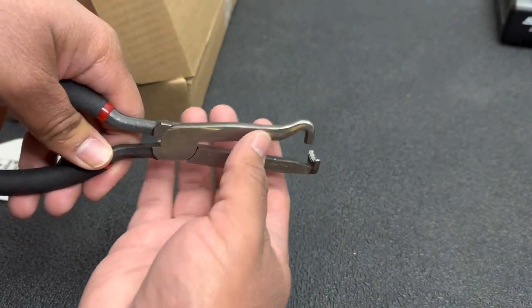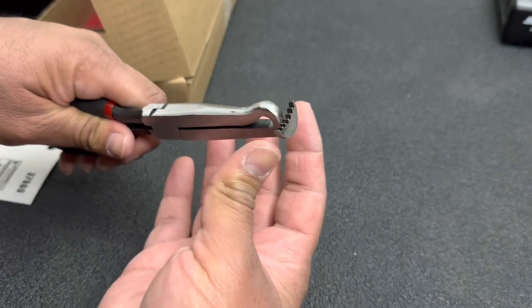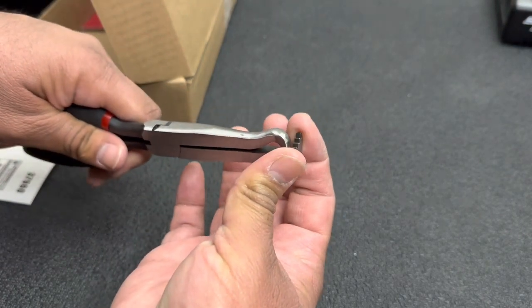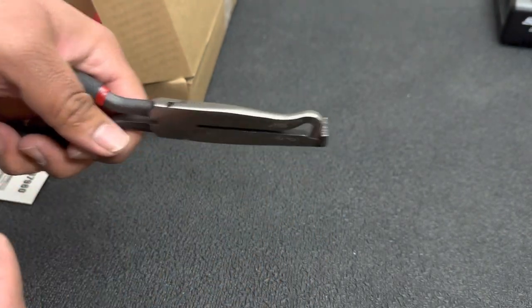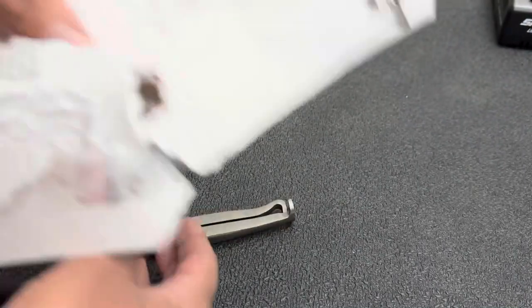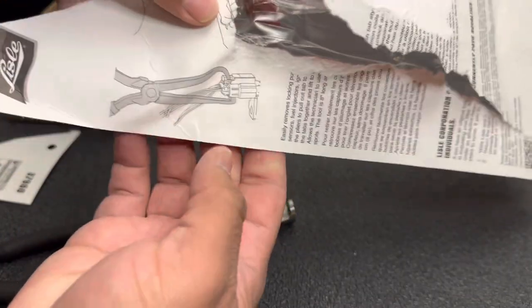You can use this hook to pull out the locking tab and then squeeze down on the connector. The wider end grabs it up from the bottom, the hook from the top, and then you pull the connector out, kind of how it's shown right here in this picture.